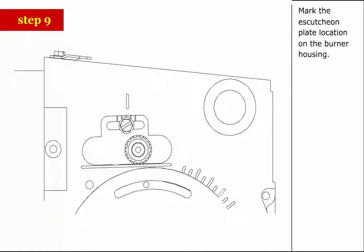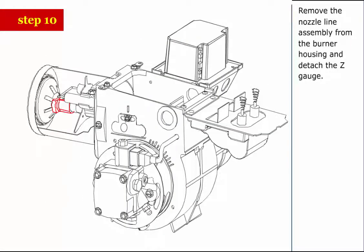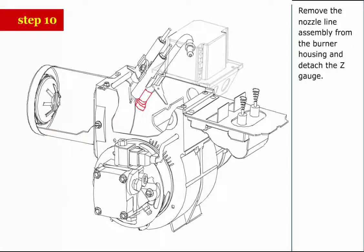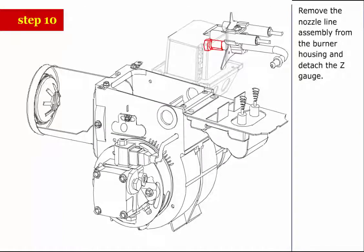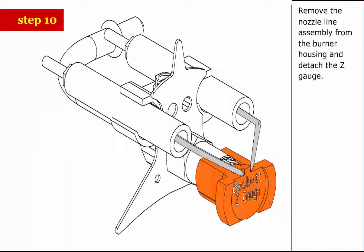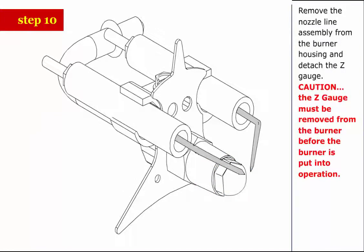Step 9: Mark the escutcheon plate location on the burner housing. Step 10: Remove the nozzle line assembly from the burner housing and detach the Z gauge. Caution: The Z gauge must be removed from the burner before the burner is put into operation.